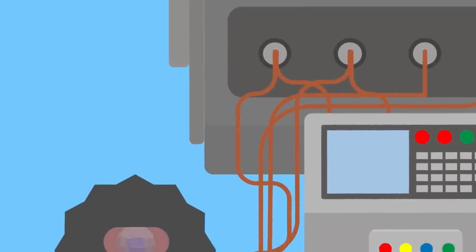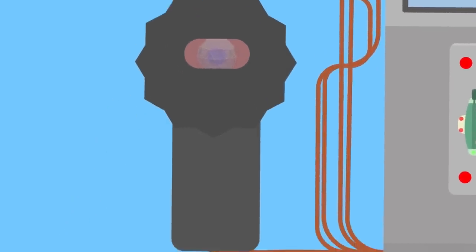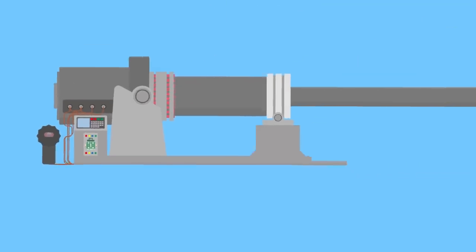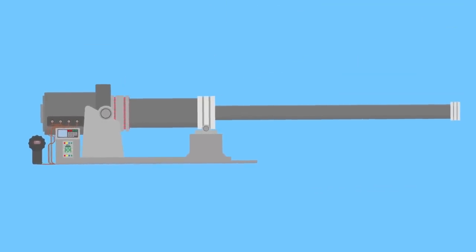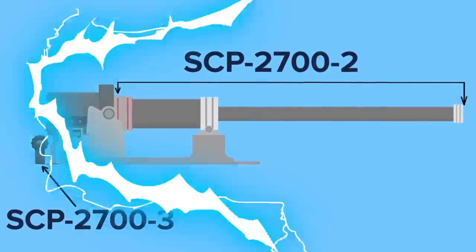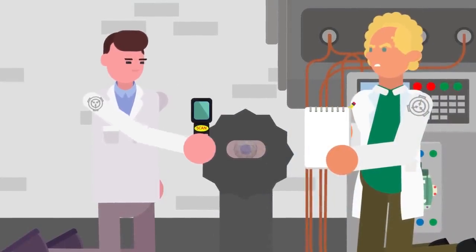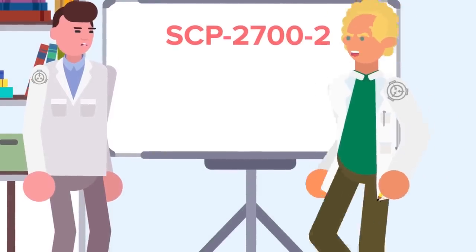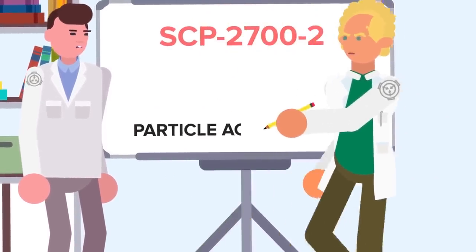A network of conductive copper wiring then connects the SCP-2700-1 control console to the other two components of SCP-2700, appropriately known as SCP-2700-2 and SCP-2700-3. Foundation researchers tasked with examining and understanding the Teleforce believe the SCP-2700-2 part of the device to be a particle accelerator.